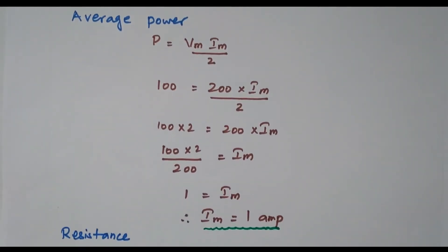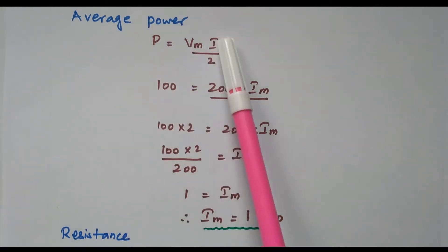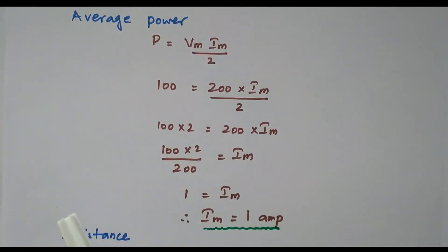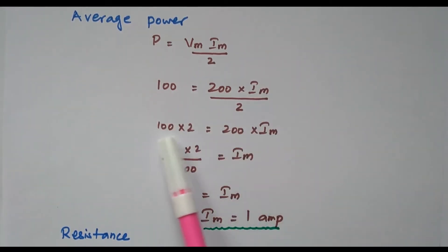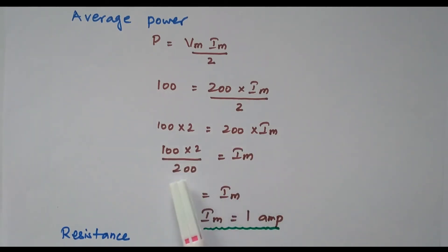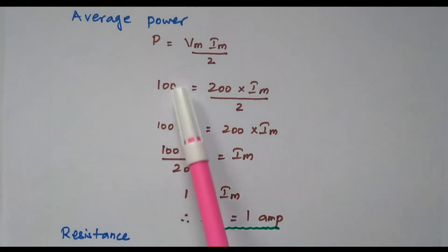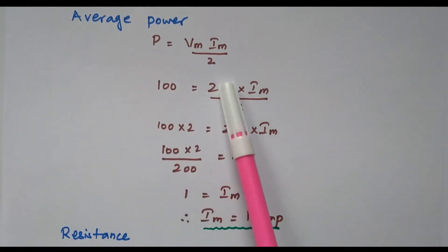First, we will find the average power to determine the current. Using P = (Vm × Im) / 2, with P = 100 watts and Vm = 200: 100 = (200 × Im) / 2, so Im = (100 × 2) / 200 = 1 ampere. From the given power and Vm, we calculated the maximum current as 1 ampere.